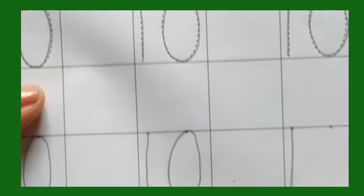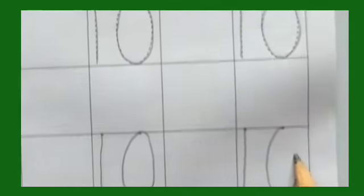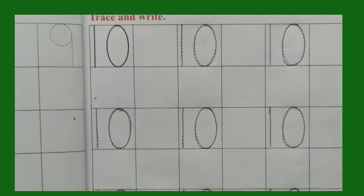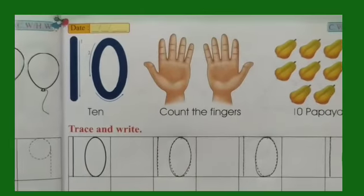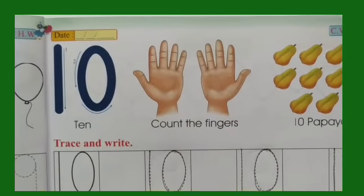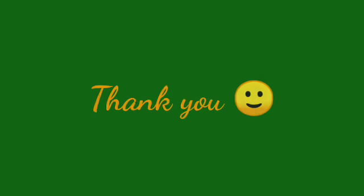So standing line and make zero, number ten. So children, we have finished writing number ten. So kindly practice one to ten. We'll meet again in the next video. Till then, bye children. Thank you.